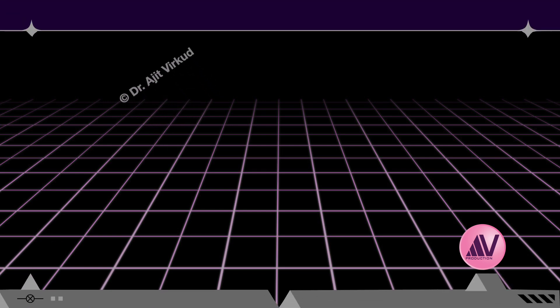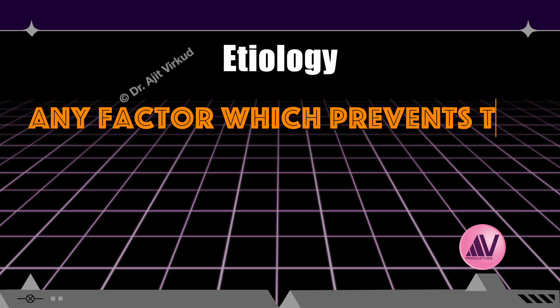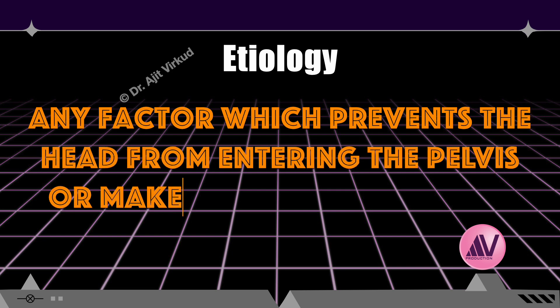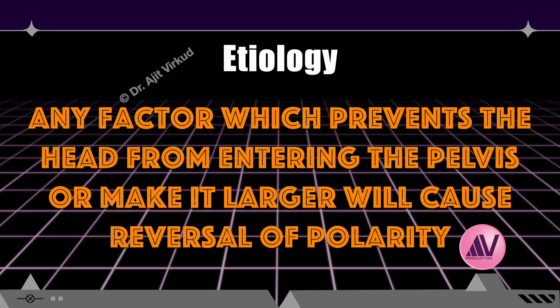Any factor which prevents the head from entering the pelvis or makes it larger will cause reversal of polarity. Various etiological factors for breech presentation include cephalopelvic disproportion, hydrocephalus, placenta previa, prematurity, bicornuate or septate or arcuate uterus, fetal hypotonia due to conditions like trisomy 13, 18, 21, Potter's syndrome, and myotonic dystrophy. Pendulous abdomen, fundal or cornual implantation of placenta may also cause this malpresentation.